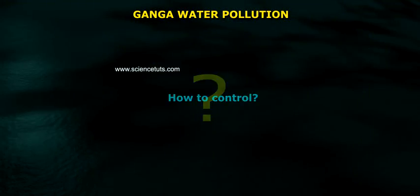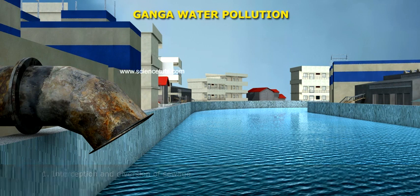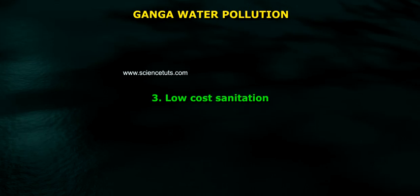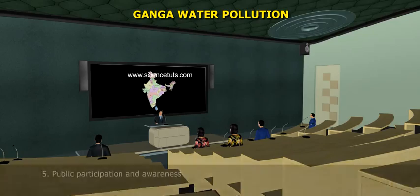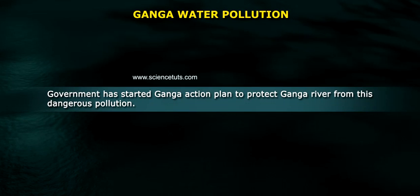How to control? 1. Interception and diversion of sewage. 2. Sewage treatment plant. 3. Low-cost sanitation. 4. Riverfront development. 5. Public participation and awareness. The Government has started the Ganga Action Plan to protect Ganga River from this dangerous pollution.